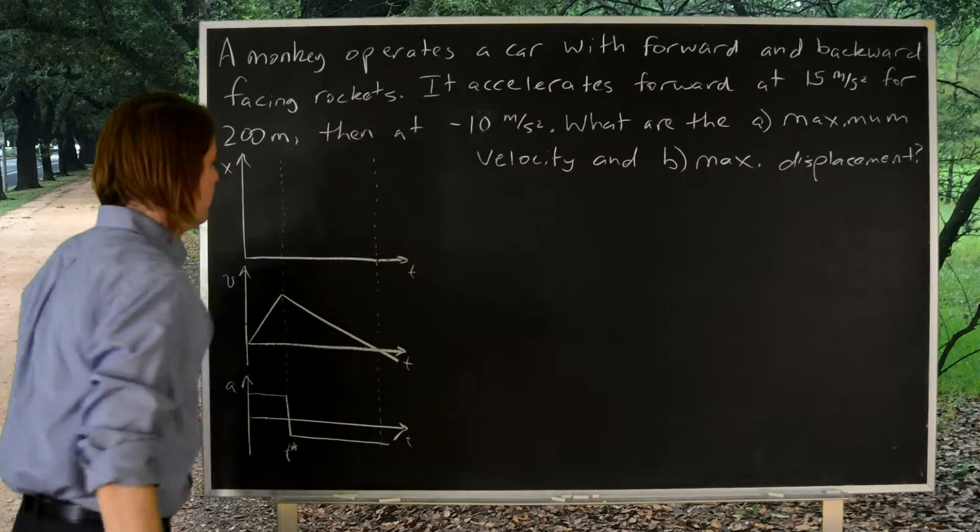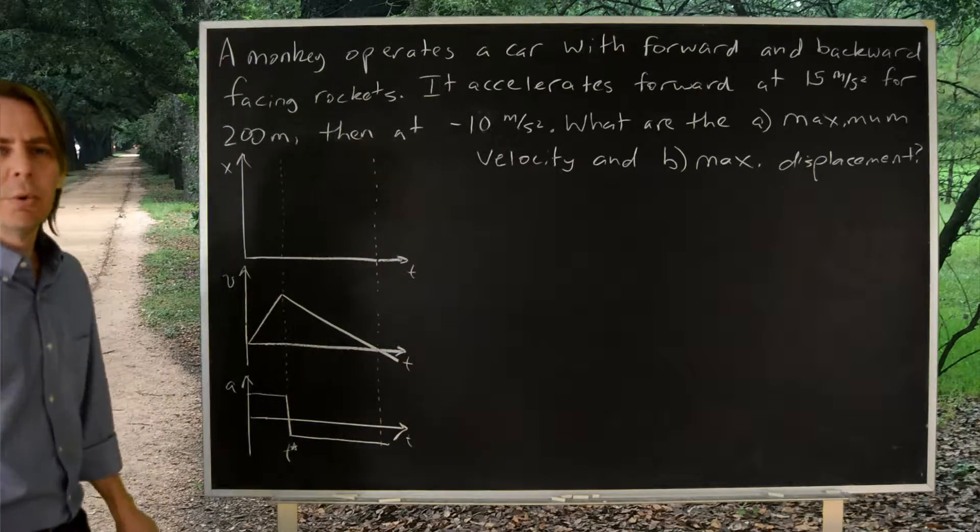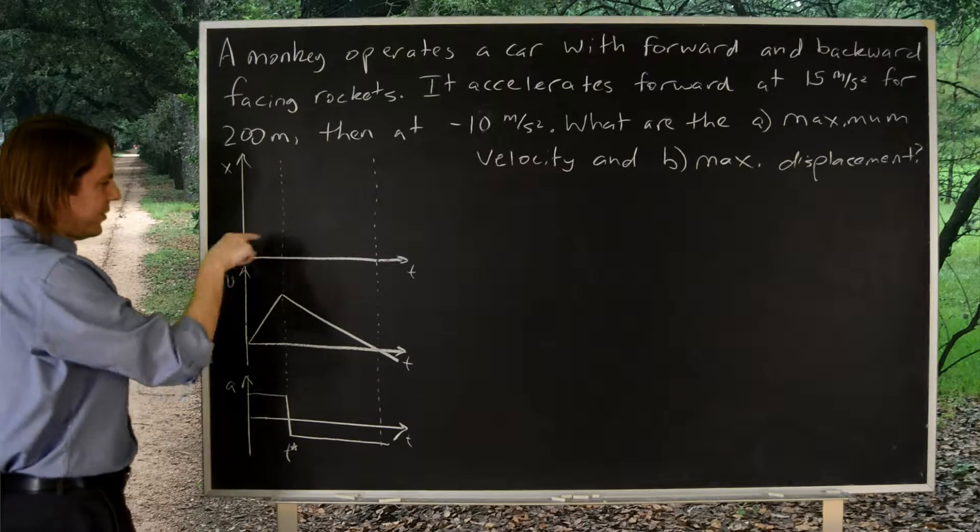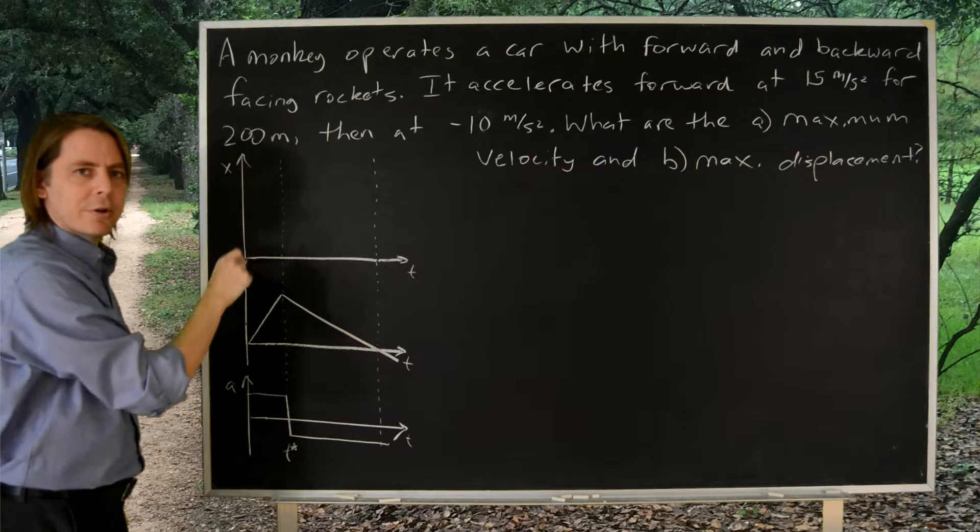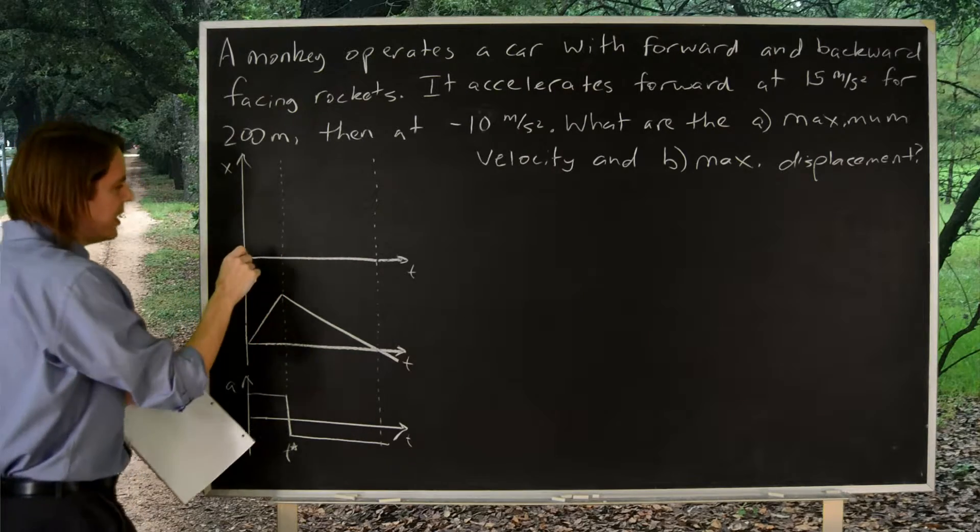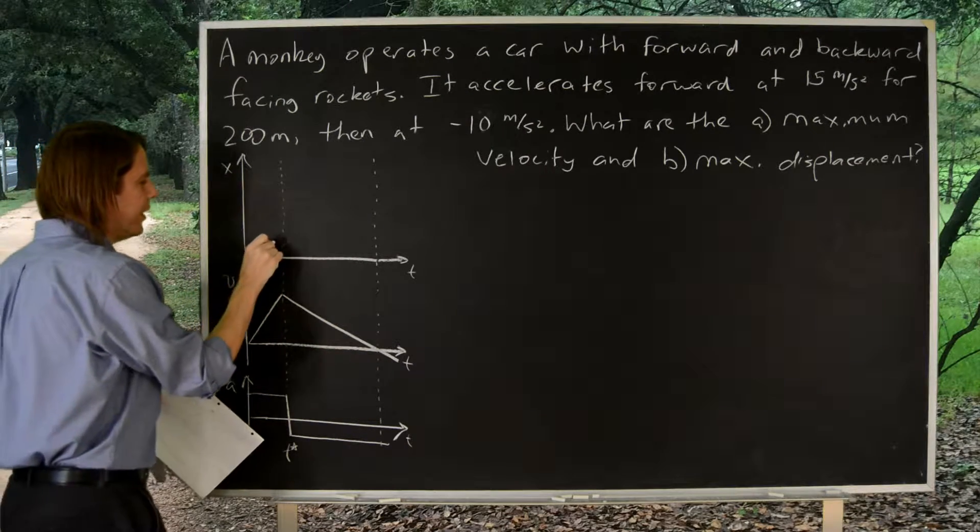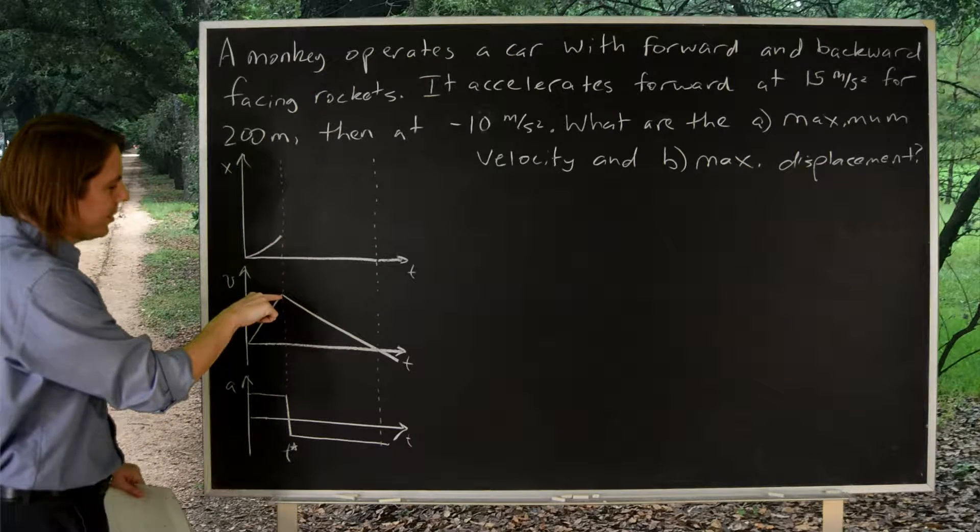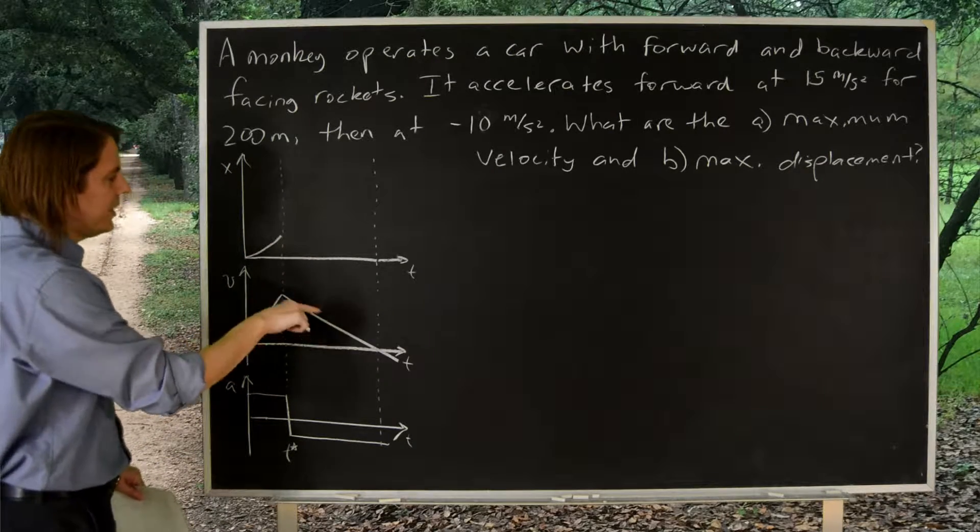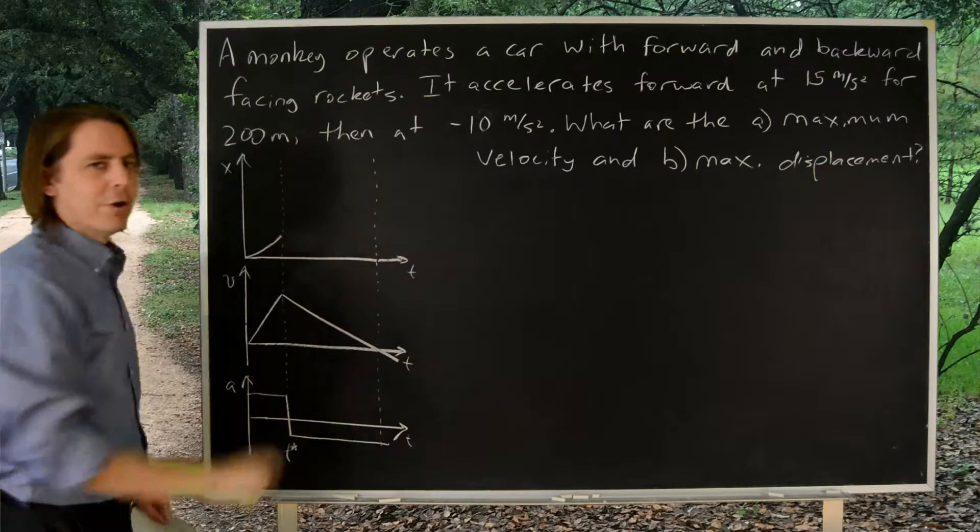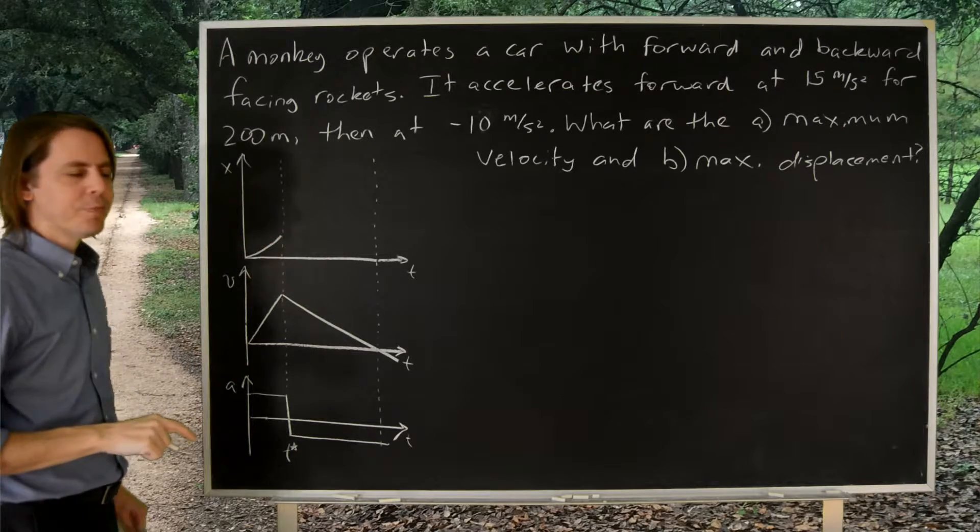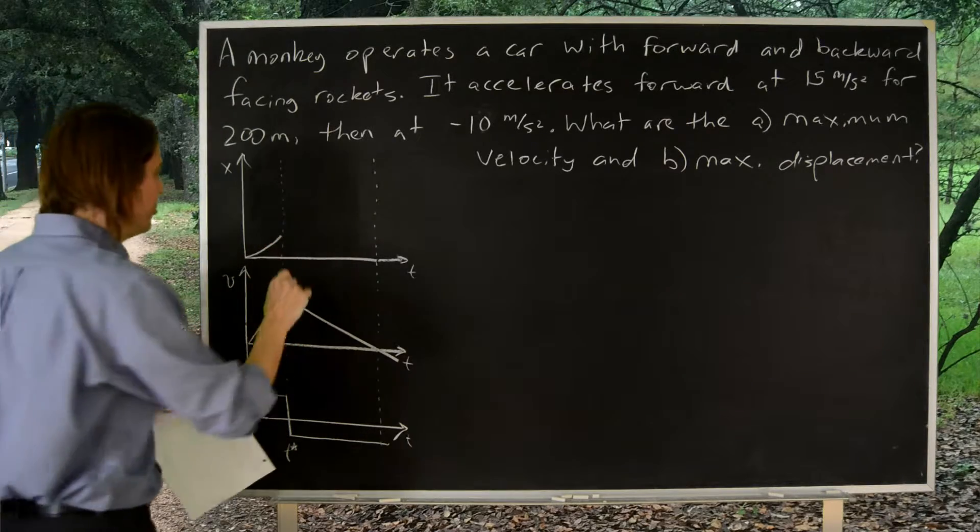Now we're ready to draw our position, what we think the position is going to look like. When something is accelerating, you get a parabola. It kind of goes as t squared. So that would look like this. Faster, faster, faster. And then what happens here is it's going down. It's a parabola the other way. It's a slowing down parabola. But the main thing you've got to match is right here. The slope should be the same right there. So you're actually drawing an inflection point.